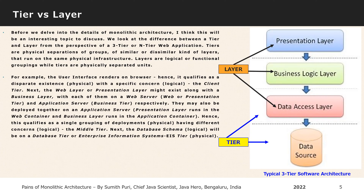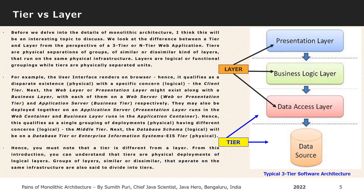For example, the user interface renders on a web browser, hence it qualifies as a disparate physical existence with a specific logical concern — the client tier. Next, the web layer or presentation layer might exist along with a business layer, with each of them on a web server and application server respectively. They may also be deployed together on an application server.